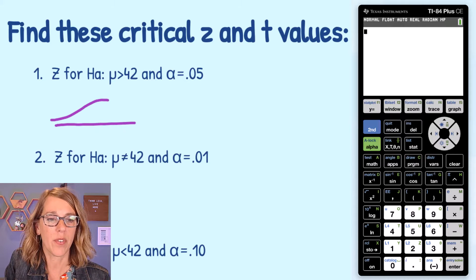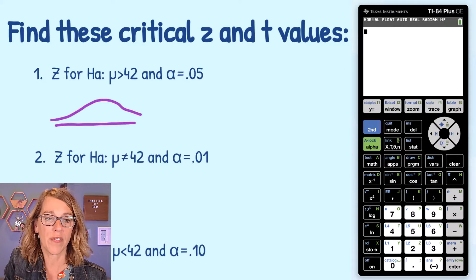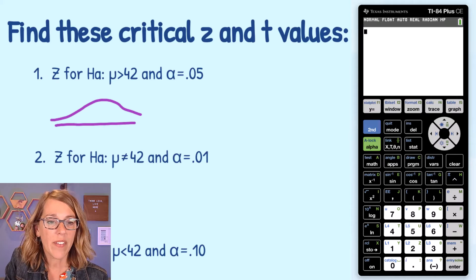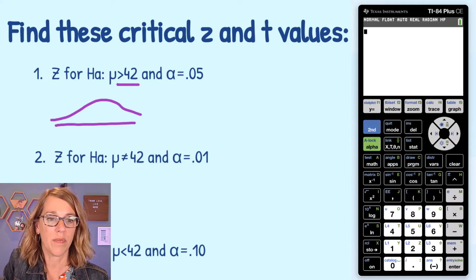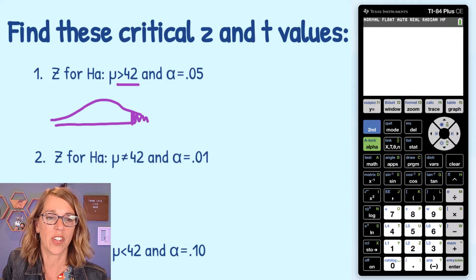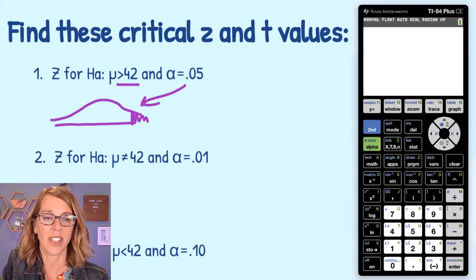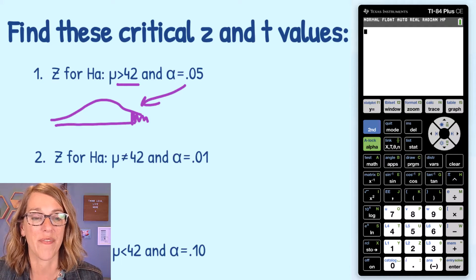So for this first one, I'm looking for the critical value for an alternative hypothesis where I've got a greater than 42. That means my rejection region is over here with a size, an area of 0.05.